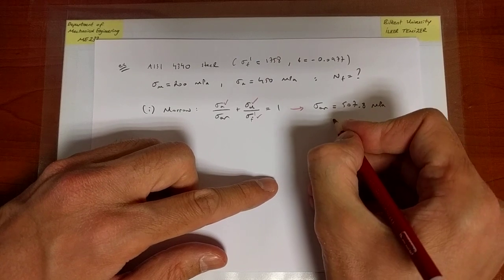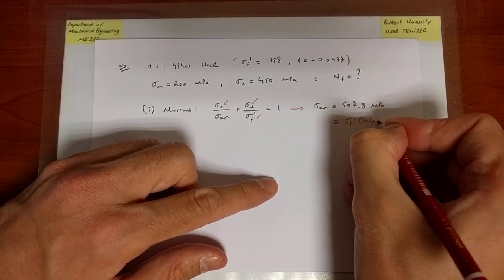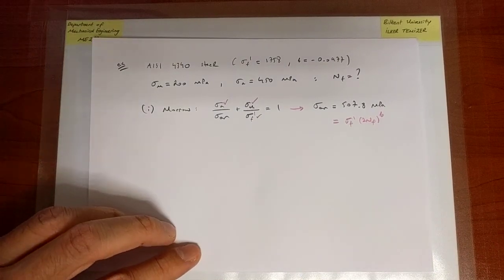The Basquian equation is always valid. So this is equal to sigma f prime times 2 nf to the power b.